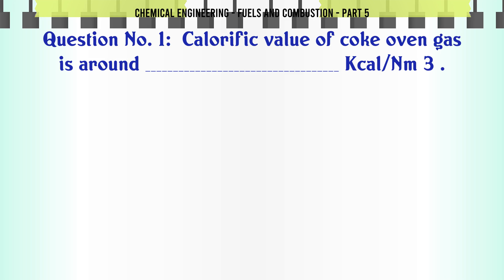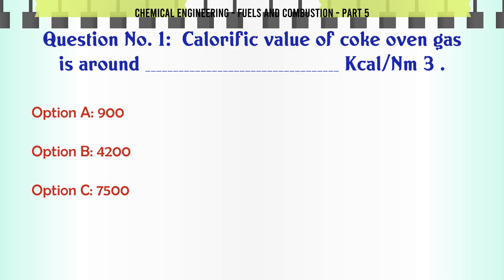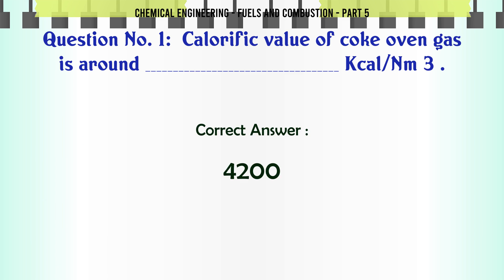Calorific value of coke oven gas is around kcal/Nm³. A. 900. B. 4,200. C. 7,500. D. 2,000. The correct answer is 4,200.